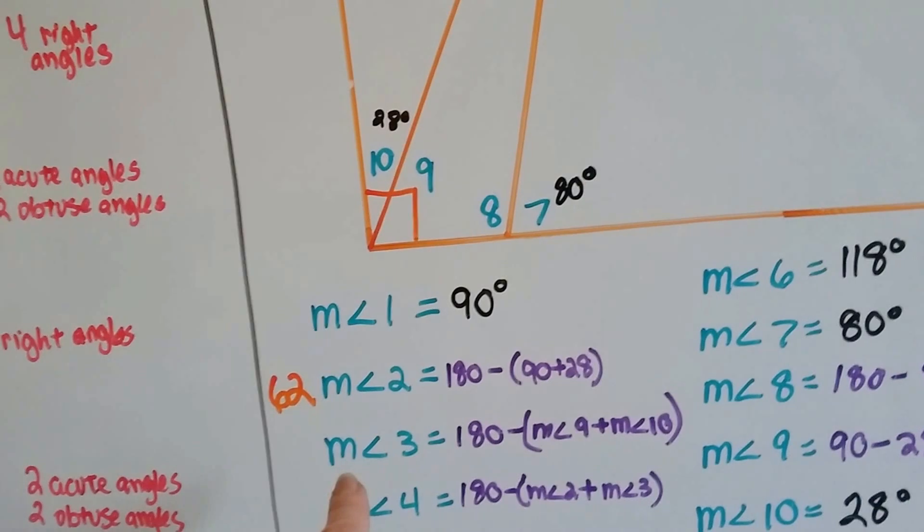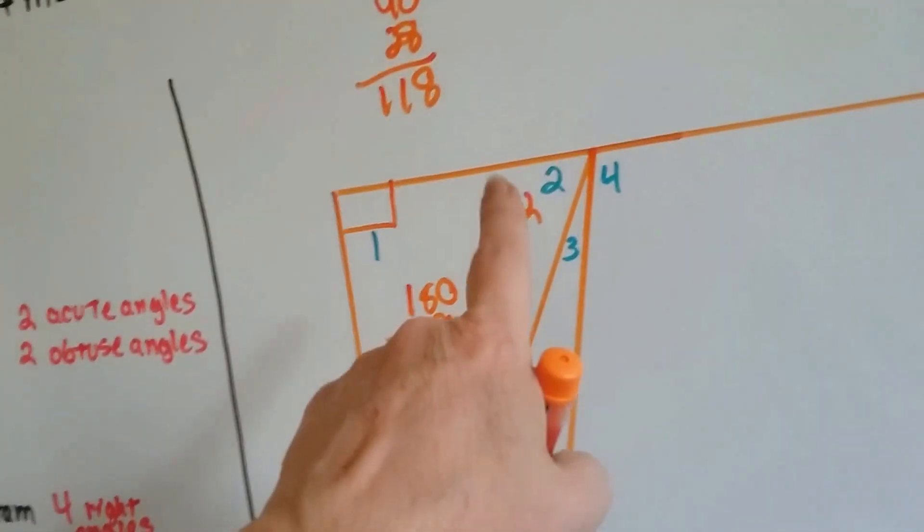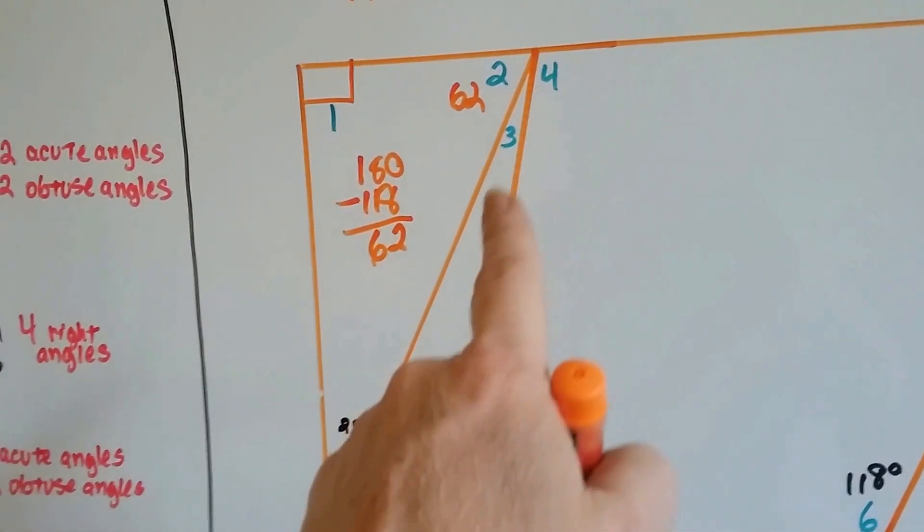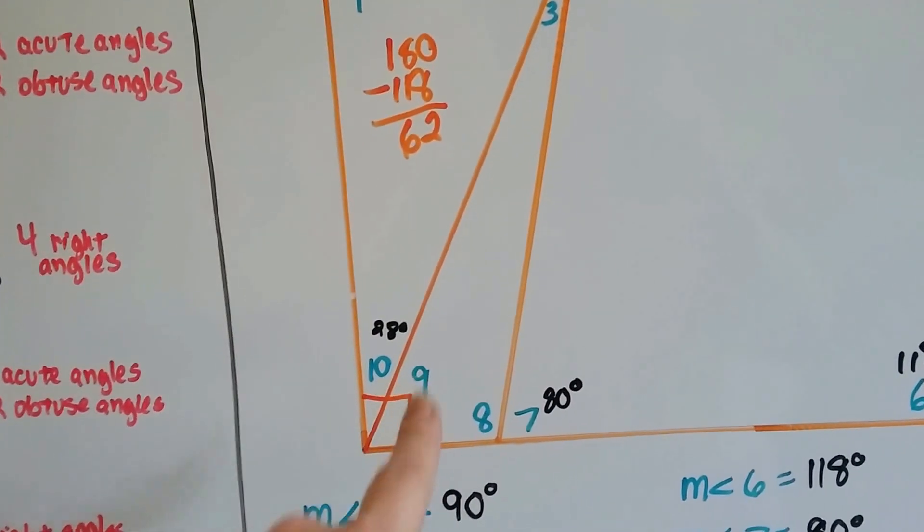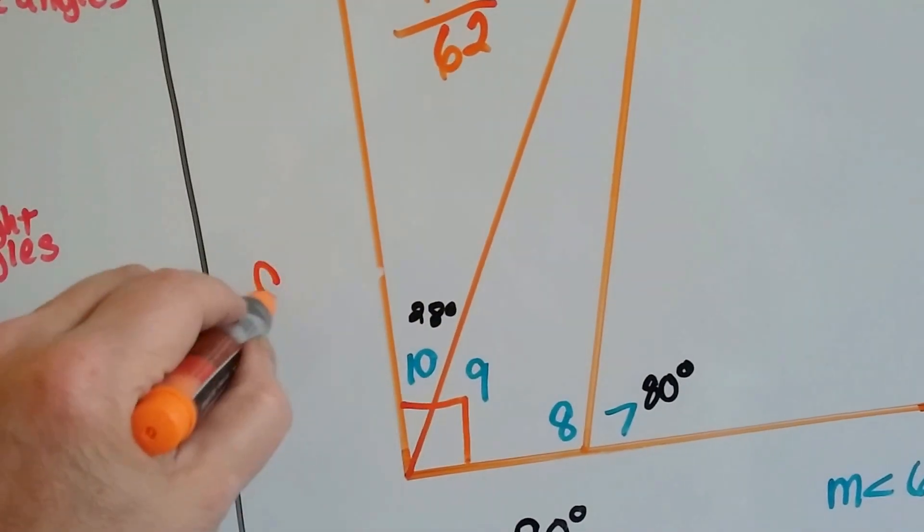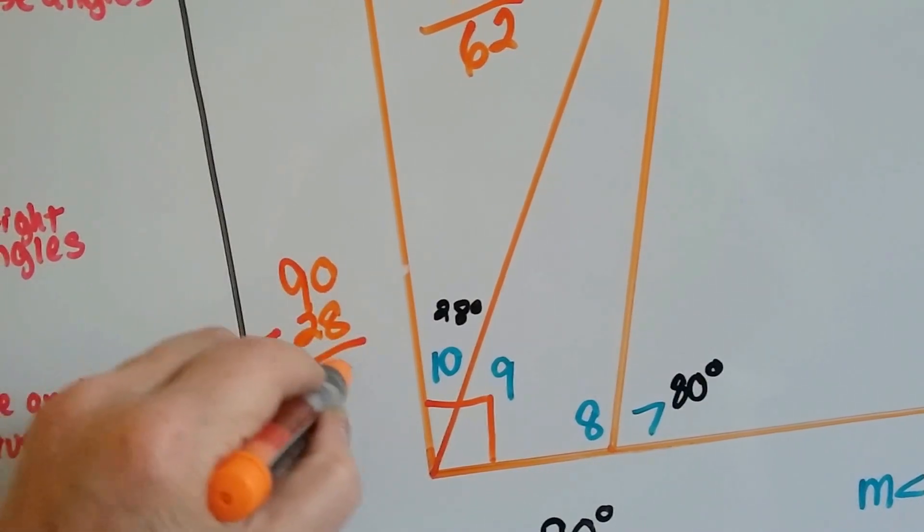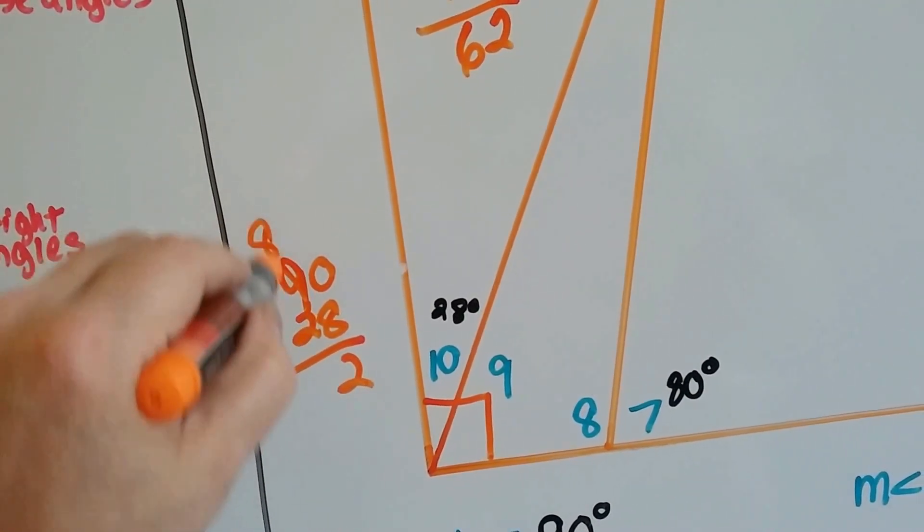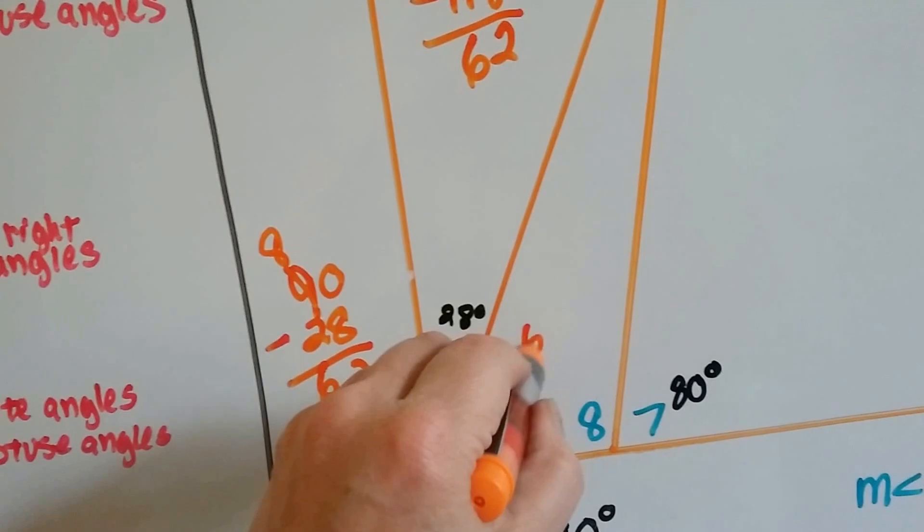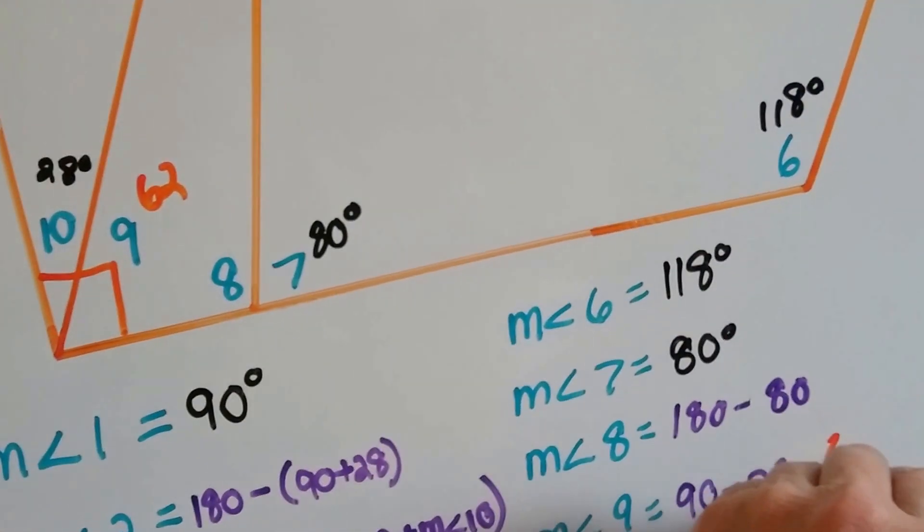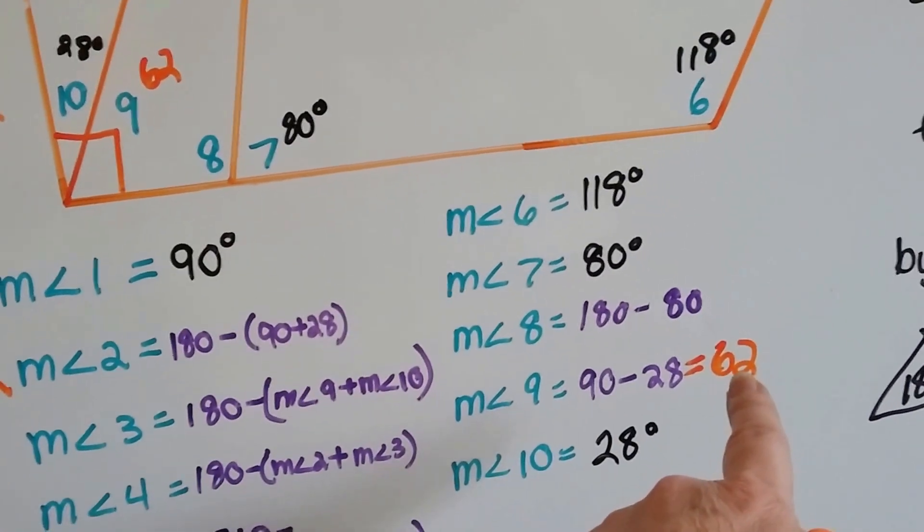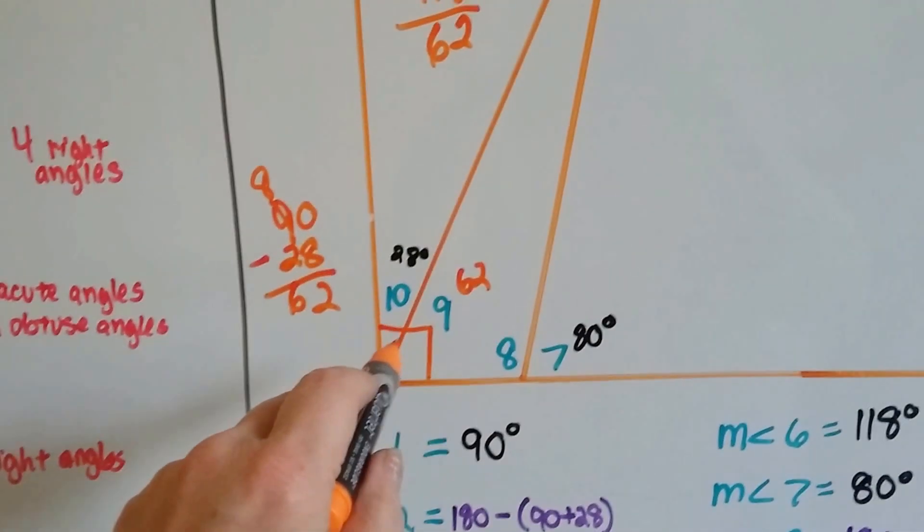So now, what other measure can we do? If we know that that's 62 degrees, is that going to help us? Well, not really, because we need another angle measure here to do this one. We do know that this is a 90 degree angle, and that's 28, so we could do this one. So what is 90 minus 28? So we know that the measure of angle 9 is 62 degrees. See? We did 90 degrees minus 28, and it was 62.